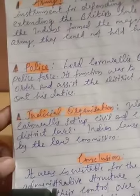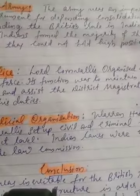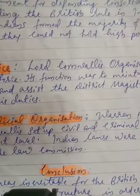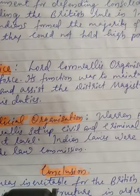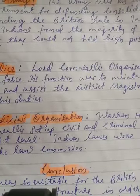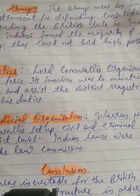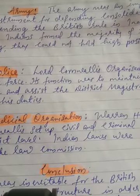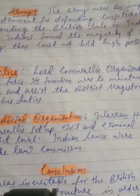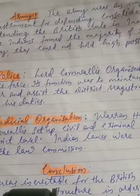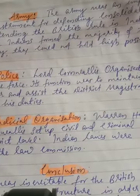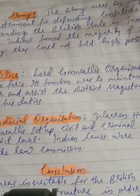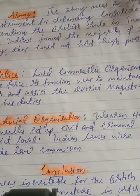Indian laws were codified in 1833 by the Law Commission. This led to the introduction of the concept of rule of law, according to which the law was the same for all, irrespective of their position, caste, religion, or economic status. However, only Europeans had special courts and were tried by British judges.